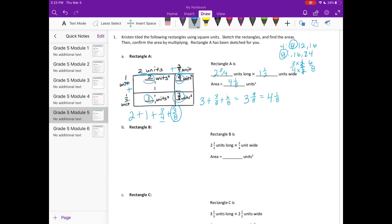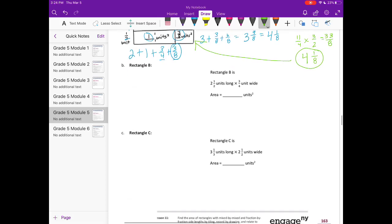Now multiply to verify: 2 and 3 fourths times 1 and 1 half. Making them improper fractions: 2 times 4 is 8 plus 3 is 11 fourths, times 1 times 2 is 2 plus 1 is 3 halves, equals 33 eighths. Dividing: 8 goes into 33 four times with 1 left over, giving 4 and 1 eighth. We get the same result whether tiling or multiplying with improper fractions.